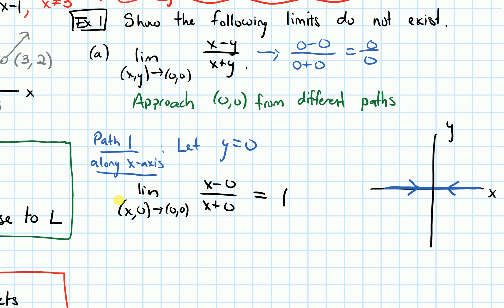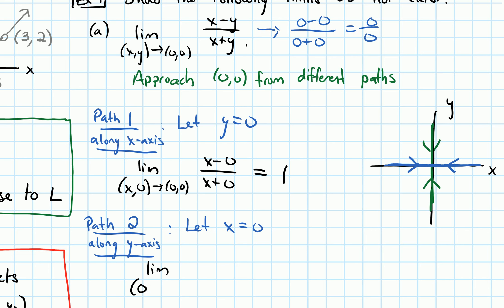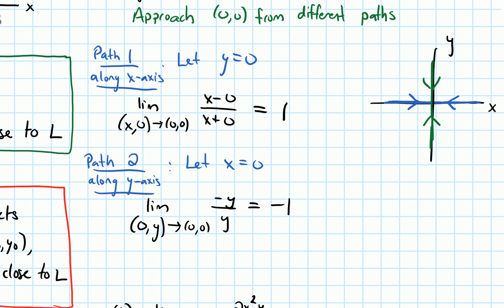Now let's try path 2: approaching along the y-axis, so we let x equal 0. Now we're on the y-axis approaching the origin. We get the limit as (0,y) approaches (0,0). In the formula, anywhere there's an x I plug in 0, giving negative y on top and y on the bottom, which simplifies to negative 1. We got different values along these two paths, so thus the limit does not exist.